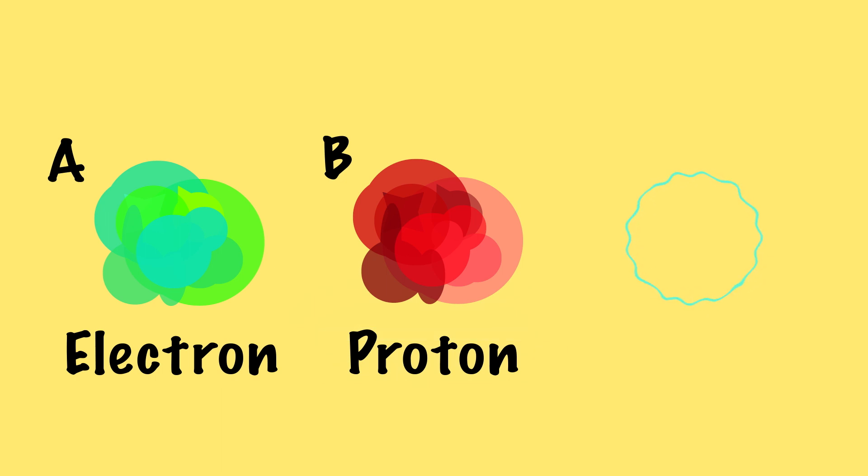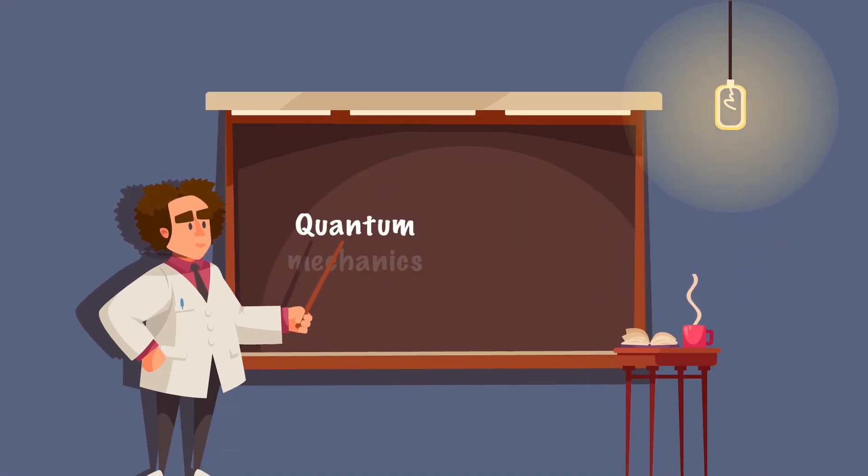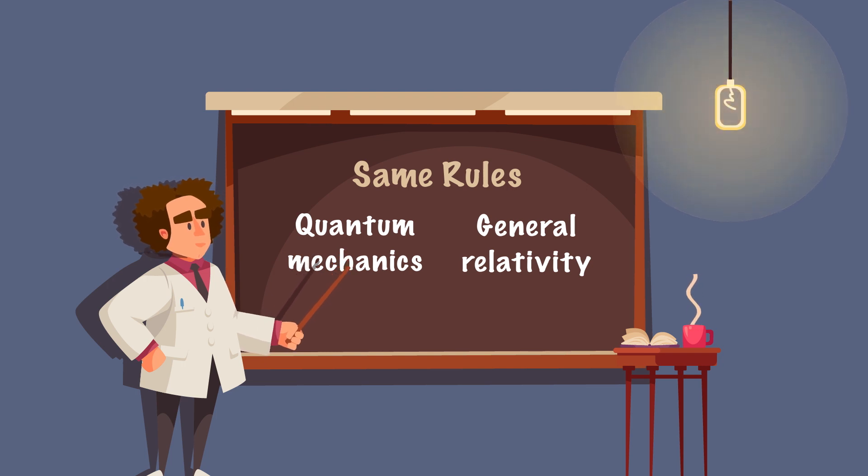Amazingly, the mathematics showed that one of these vibration patterns, let's say vibration pattern C, had mathematical properties that exactly match those of a graviton, a theoretical particle that may carry the force of gravity. For the first time in history, quantum mechanics and general relativity were, at least in theory, playing by the same rules, bringing us one step closer to unifying both of these theories.